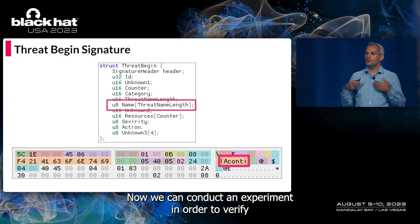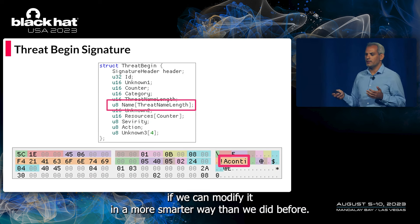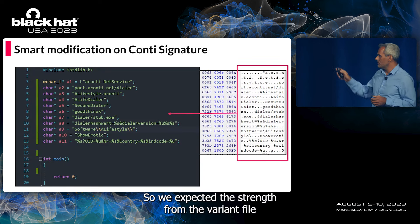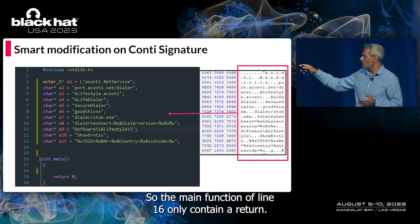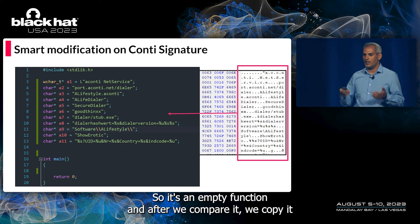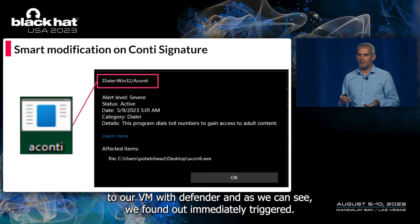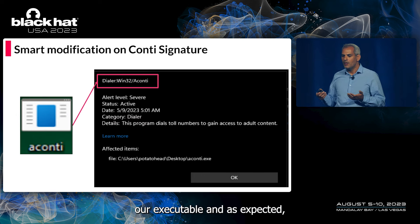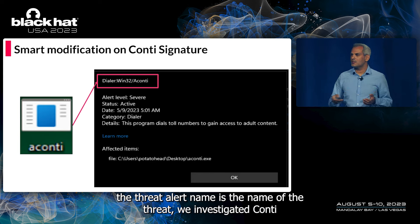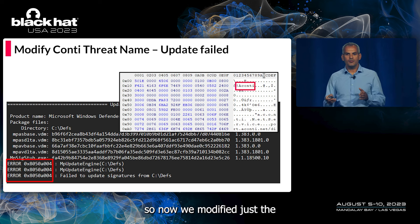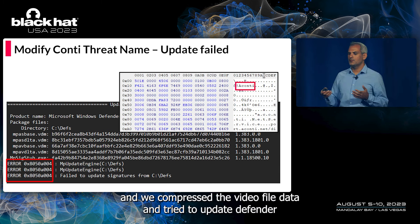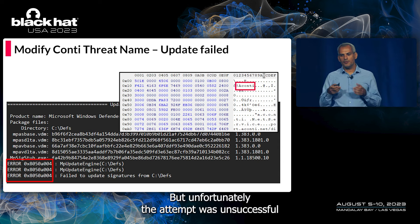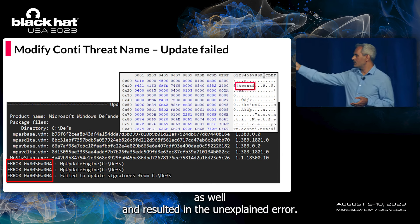We conducted an experiment to verify smarter modification. We extracted strings from the VDM file, copied them to Visual Studio, and compiled them as an empty executable containing only those strings. When we copied it to our VM with Defender, Defender immediately triggered — even though there was no malicious code — and the threat alert name was Conti, exactly as expected. We then modified just the threat name associated with the signature from Conti to something else, recompressed the VDM file data, and tried to update Defender again with this unsigned modified version. Unfortunately, the attempt was unsuccessful and resulted in an unexplained error. We assumed this error was due to a validation mechanism.